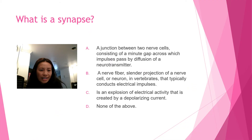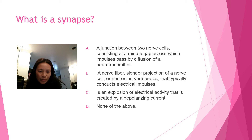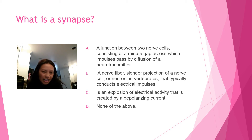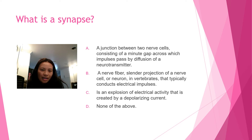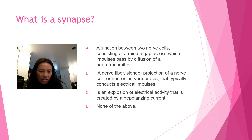Question six: what is a synapse? Is it A) a junction between two nerve cells consisting of a minute gap across which impulses pass by diffusion of a neurotransmitter, B) a slender projection of a neuron that typically conducts electrical impulses, C) an explosion of electrical activity created by a depolarizing current, or D) none of the above? The answer is letter A. Letter B is the definition of an axon, and letter C is the definition of an action potential.